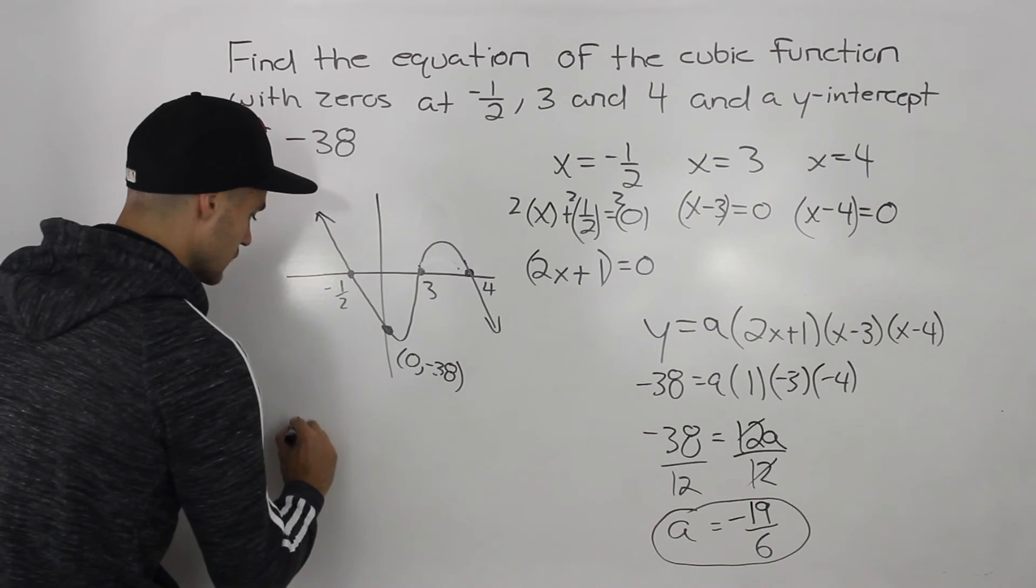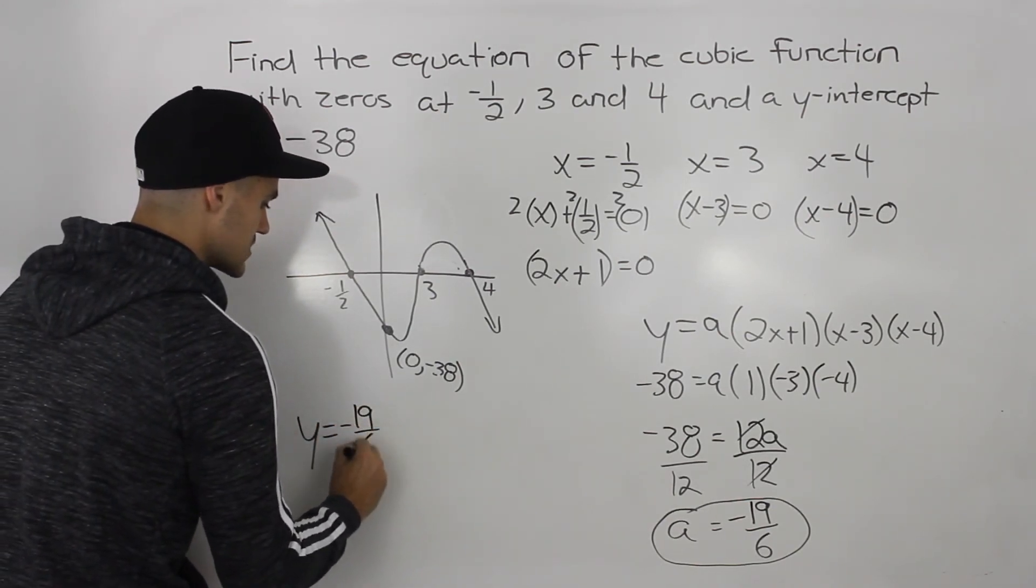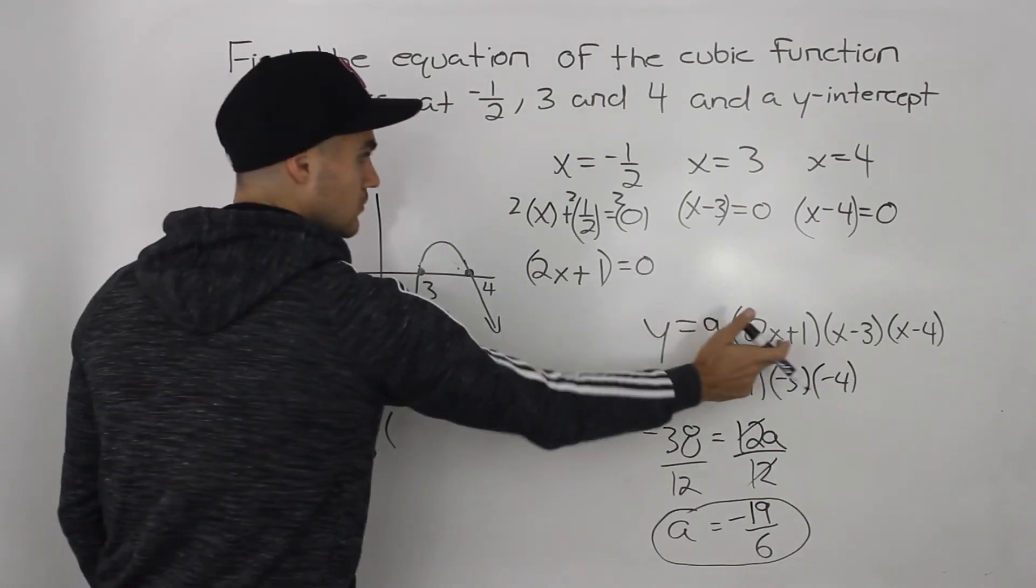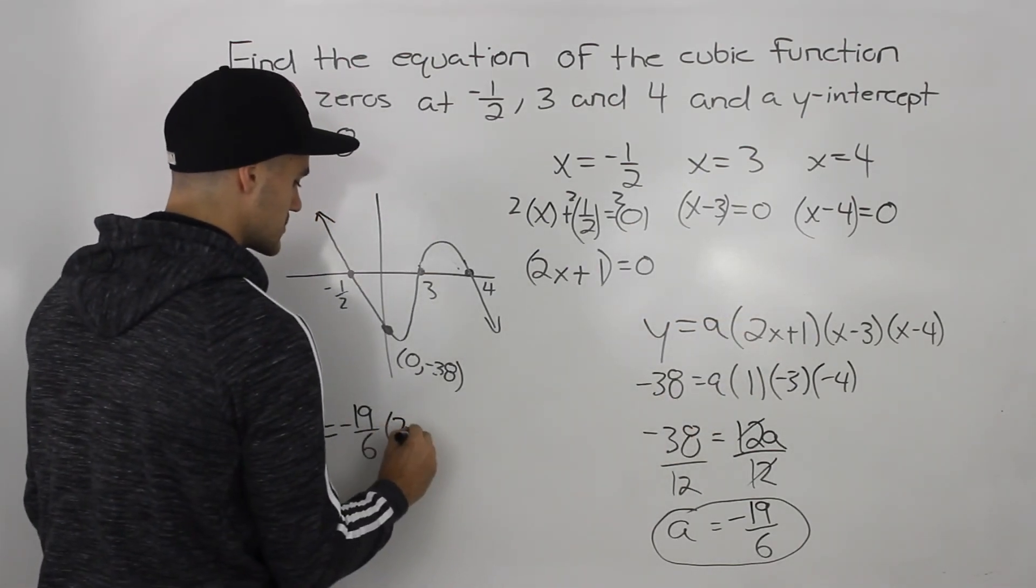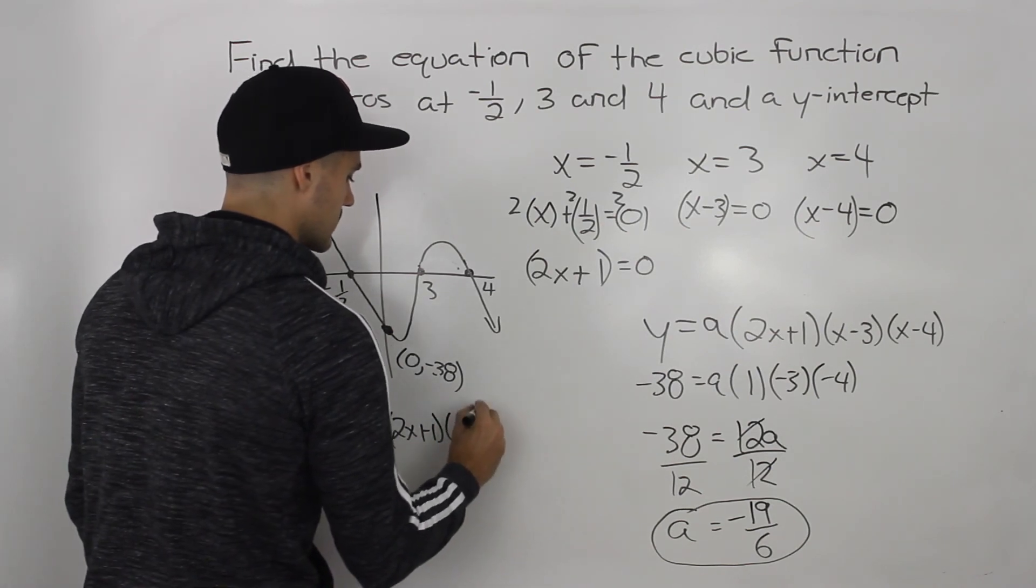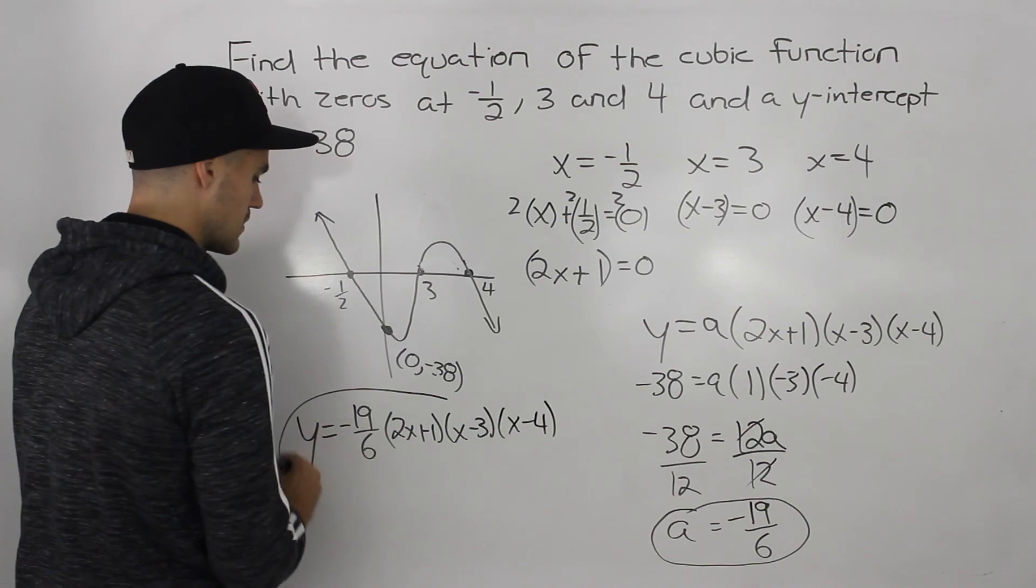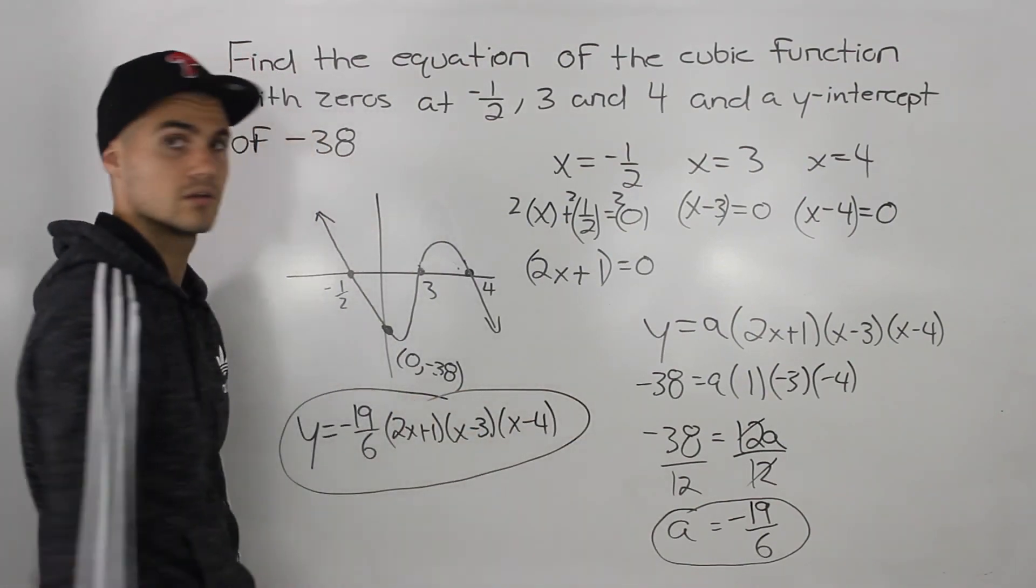So our final equation for this function is negative 19 over 6, the a value, and then we just rewrite these factors again. So we got 2x plus 1, we got x minus 3, and then x minus 4. So that there is your final answer.